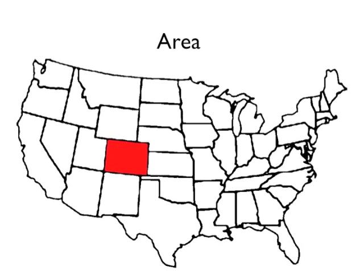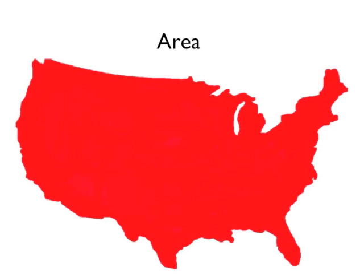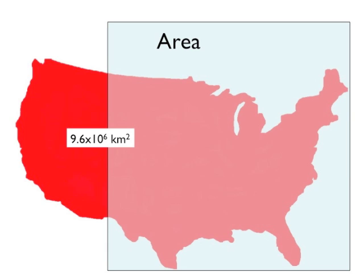Calculating the area of something with an irregular shape, such as the United States, can be quite a challenge, but in the end it will have the same units as length squared. The United States has a surface area of about 9.6 times 10 to the sixth kilometer squared. This irregular shape has the same area as a flat square, 3,100 kilometers on each side.